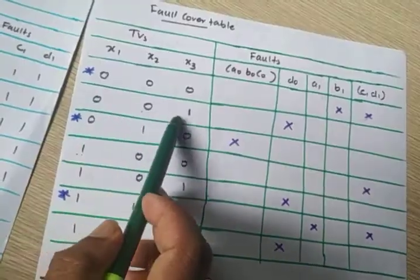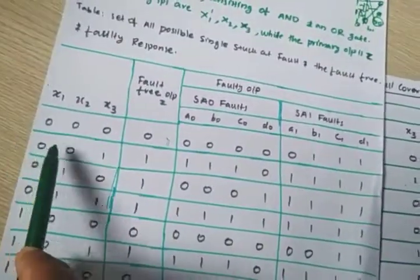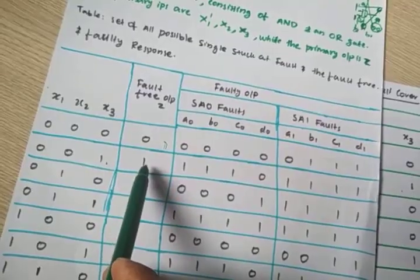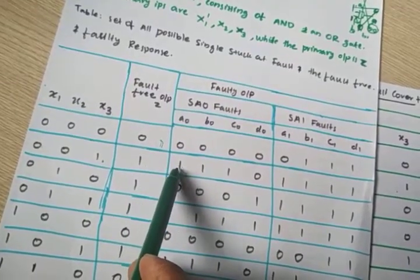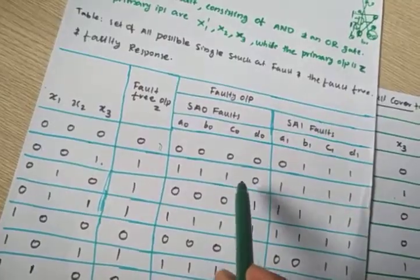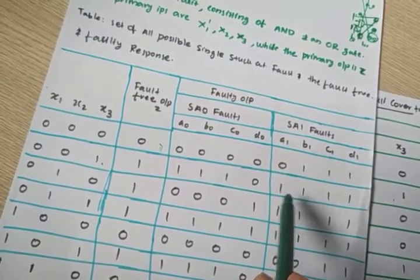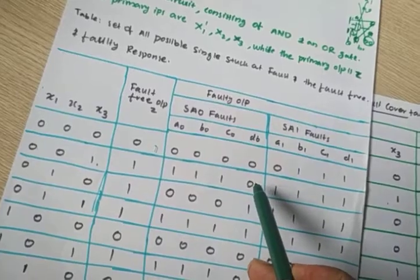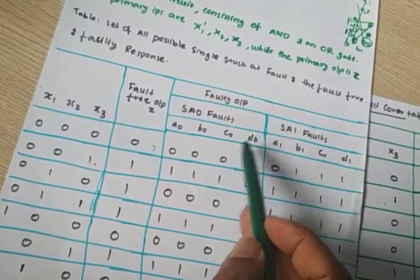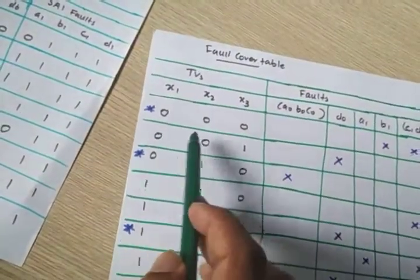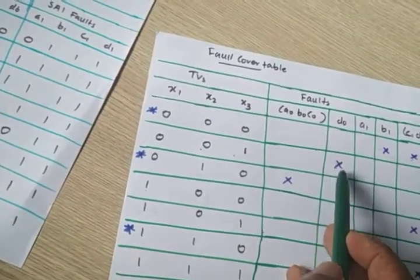Now for test vector 0,0,1: the fault-free output is 1. A0, B0, C0 all give the same output. But D0 gives a different output, so D0 is the faulty state here and should be crossed.